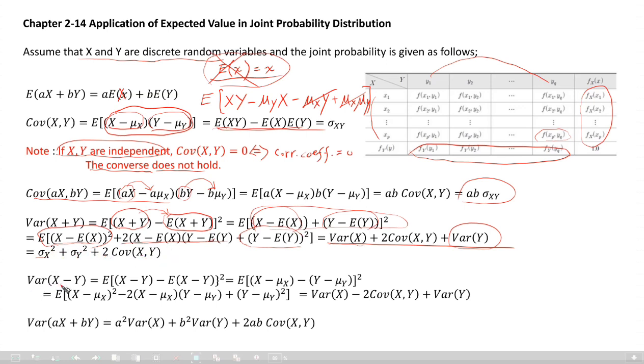How about the variance X minus Y? Same thing here. Same process. So variance X minus two covariance X, Y minus two covariance, covariance X, Y plus variance Y.